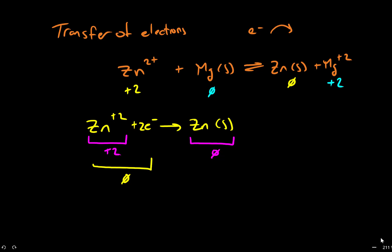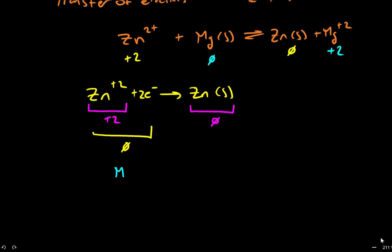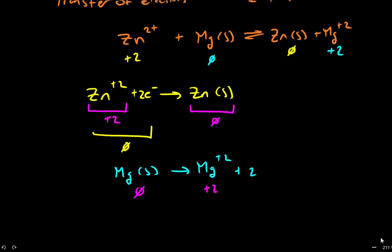Now let's do this with magnesium. Magnesium starts as a solid and ends up as a magnesium plus two cation. In this case, I have a charge of zero on the reactant side and a charge of plus two on the product side. The number of atoms are balanced but the charge is not, so I need to add two electrons to the product side to balance the charge. That gives me my second balanced half reaction.